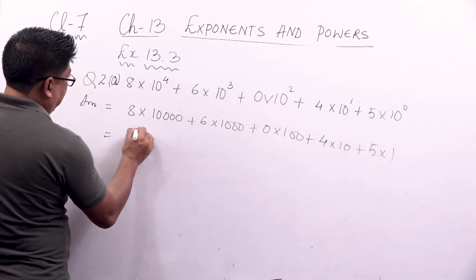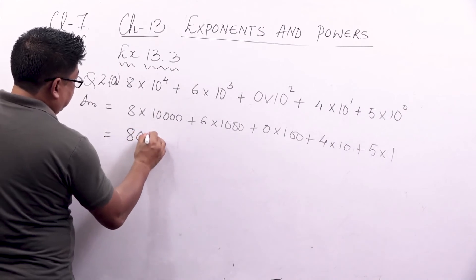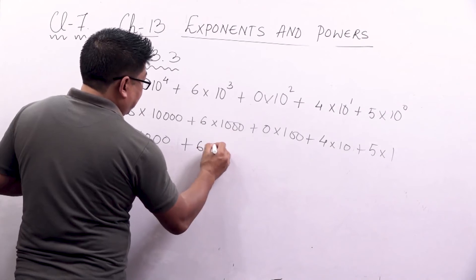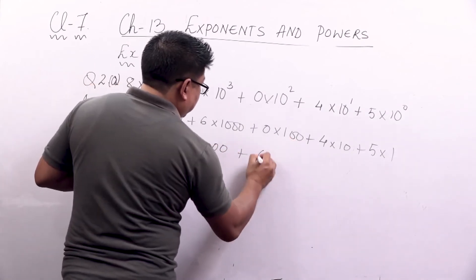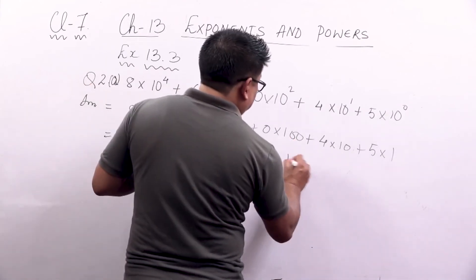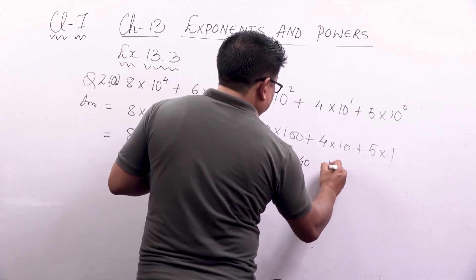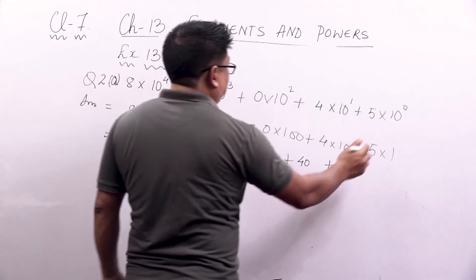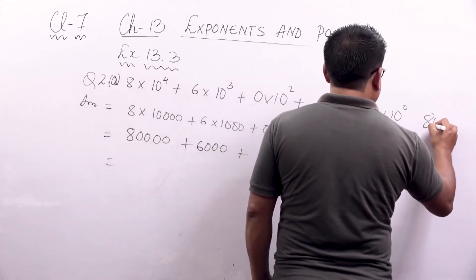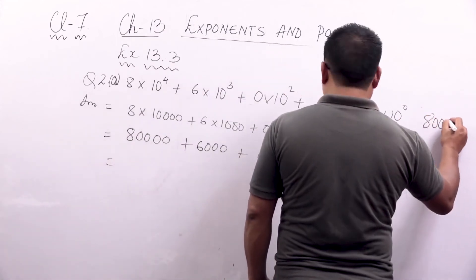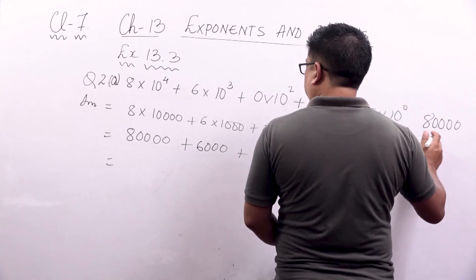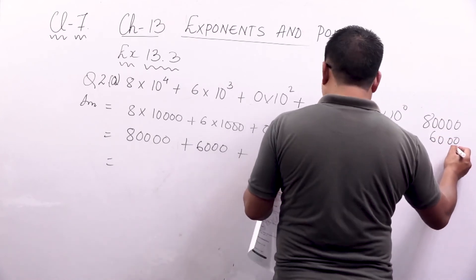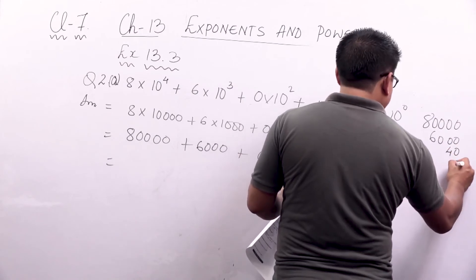So this will be: 8 into 10000 gives 80000, plus 6 into 1000 gives 6000, plus 0 into 100 gives 0, plus 4 into 10 gives 40, plus 5 into 1 gives 5. To form the number, simply add all the values: 80000 plus 6000 plus 40 plus 5 gives 86045.